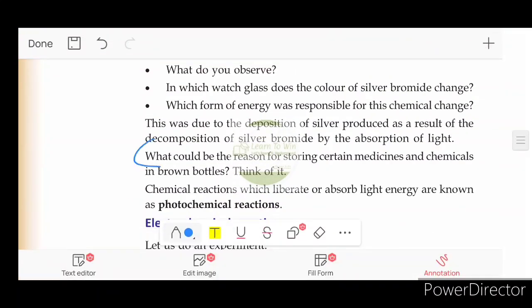What could be the reason for storing certain medicines and chemicals in brown bottles? The medicines and chemicals may react with sunlight and chemical reaction may take place. That is why we store the medicines and chemicals in brown and dark bottles.